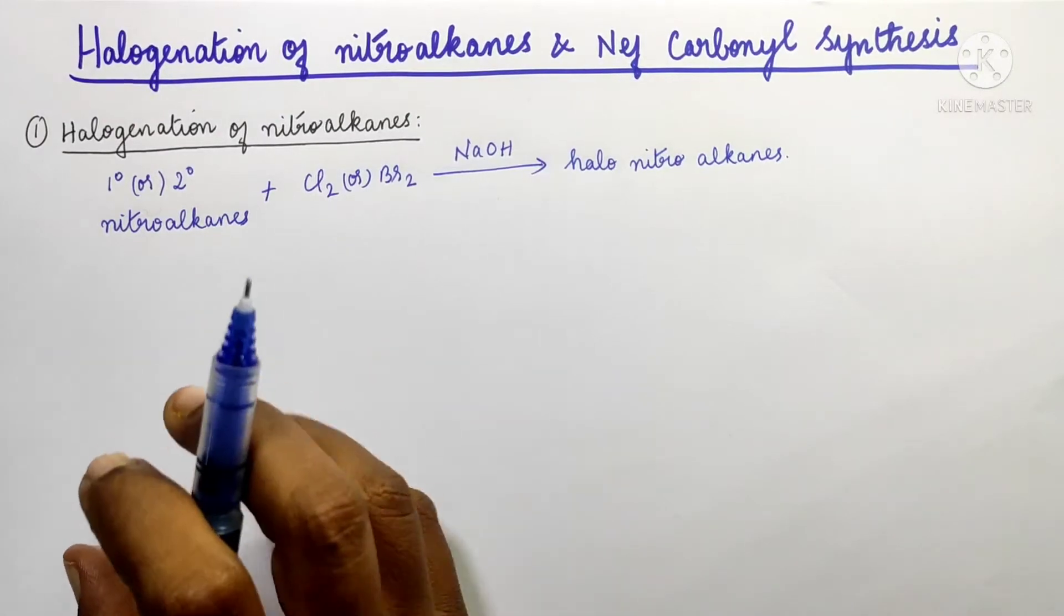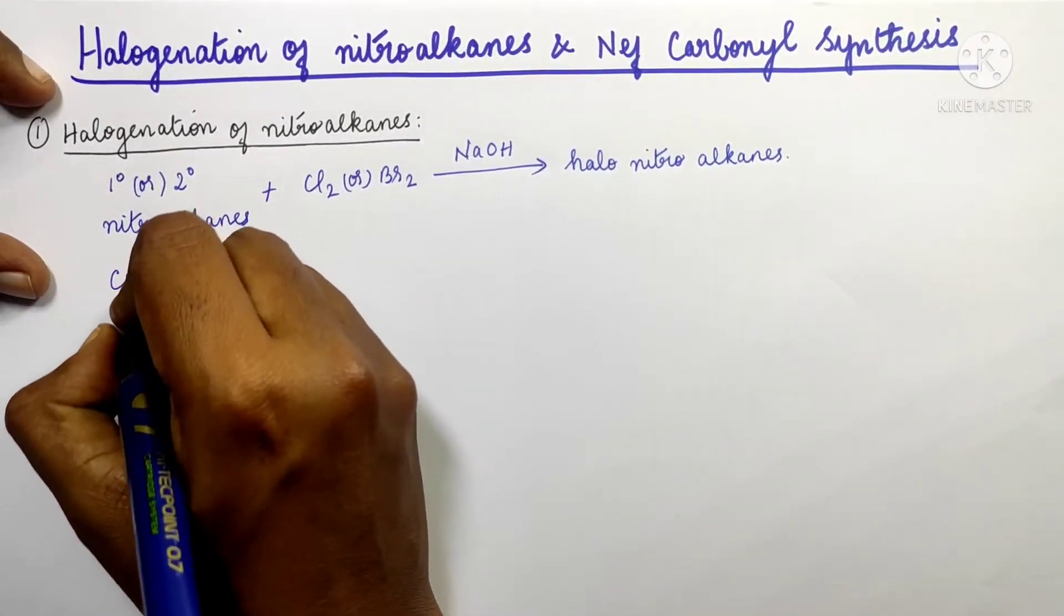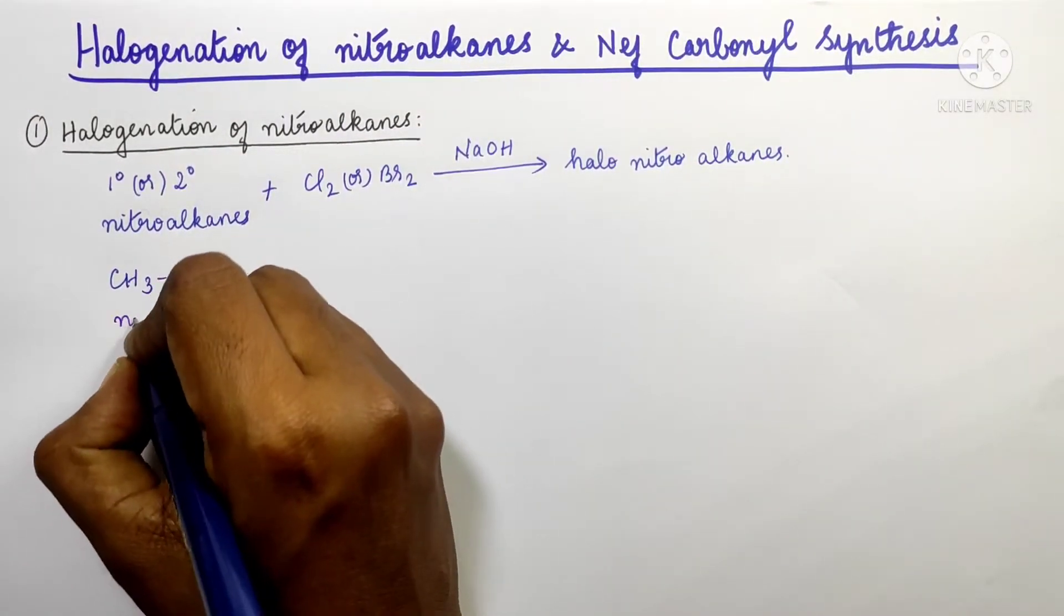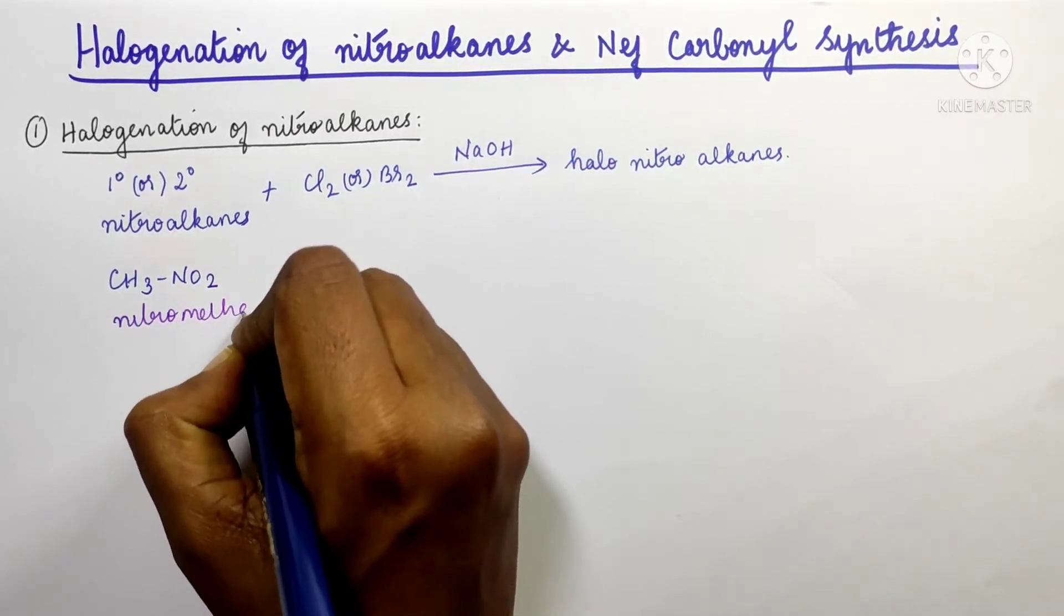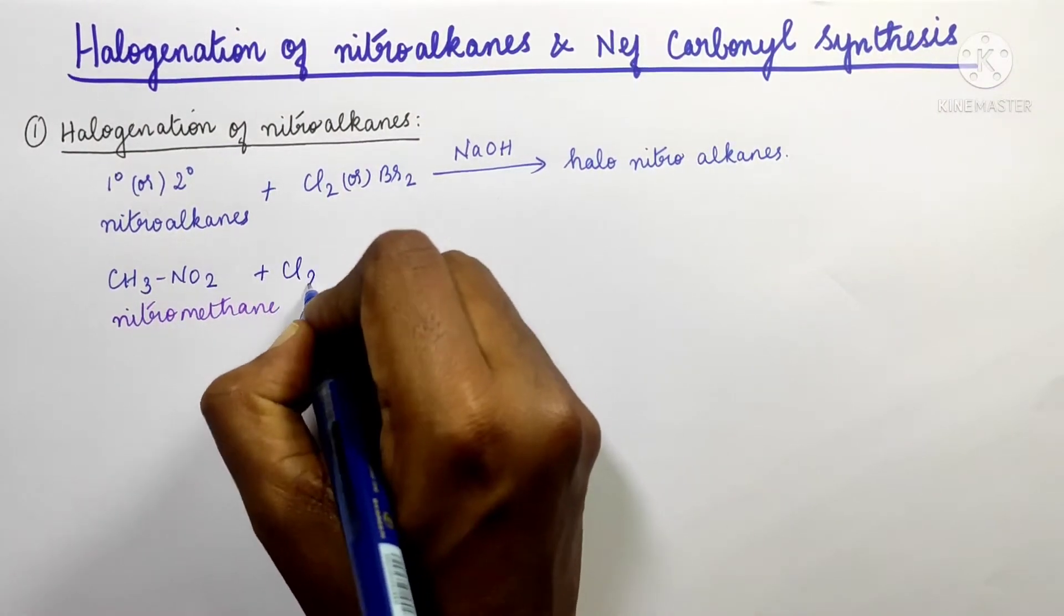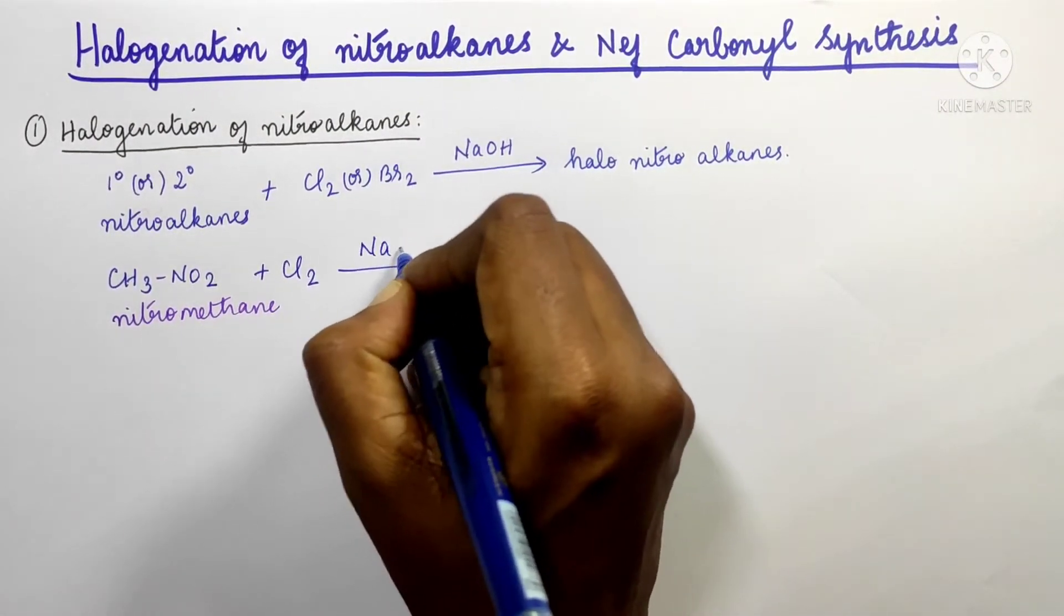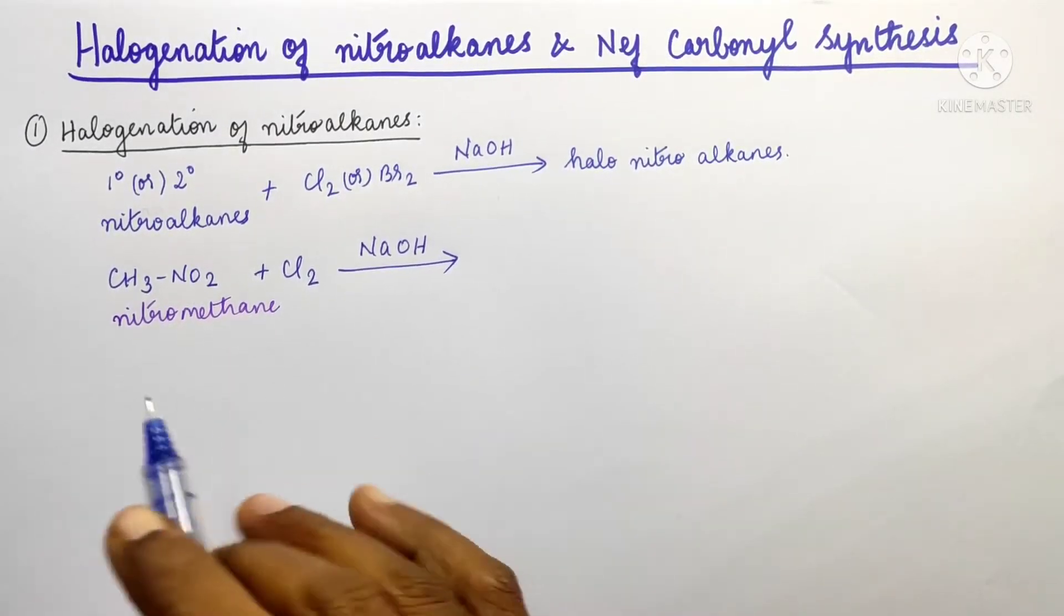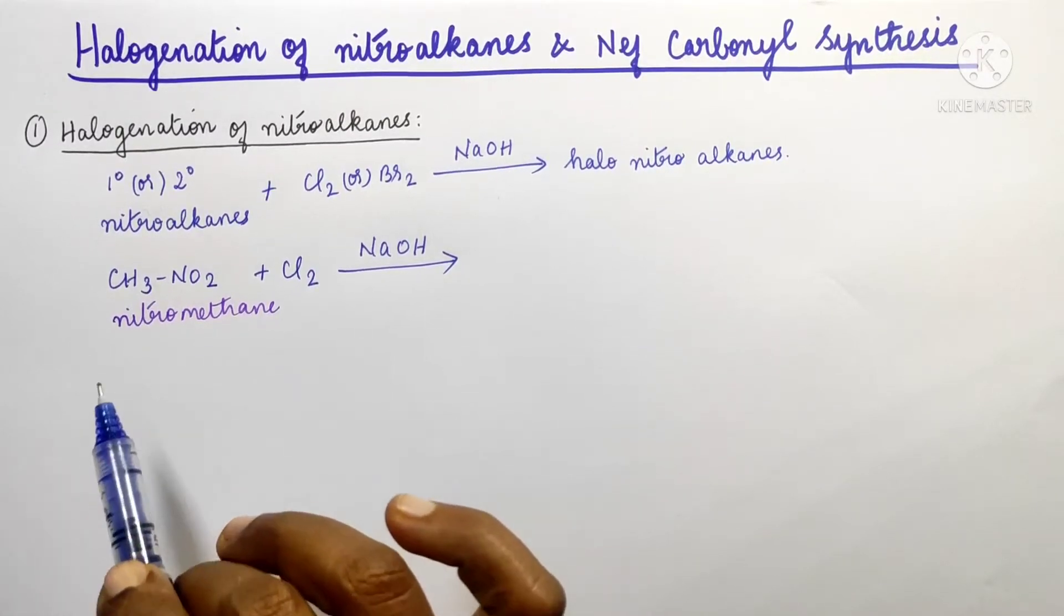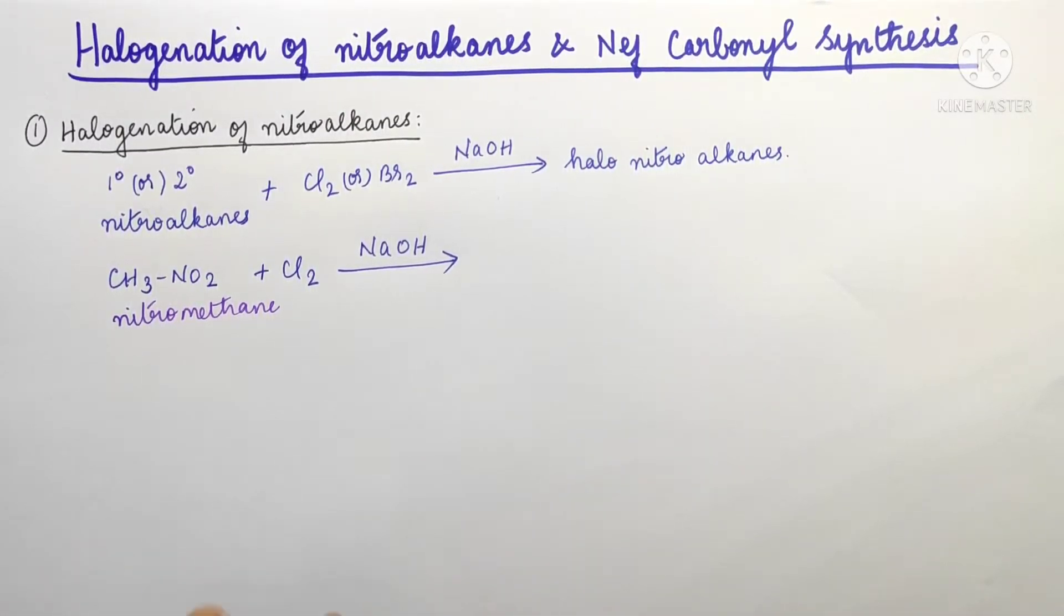So first, we will take a specific example. We start with nitromethane. Nitromethane in presence of sodium hydroxide is treated. In presence of sodium hydroxide, alpha hydrogen atoms are present. At that time when we add halogen, it replaces.